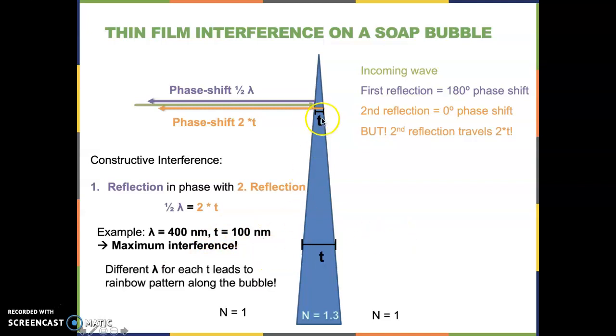Now we can see that as T changes, there is always, with a changing T, a different lambda that causes this maximum amount of interference. Therefore, I am seeing different colors constructively interfering as I go along the bubble. And at the very top, where my T is super thin, I am having the case where T is almost zero.